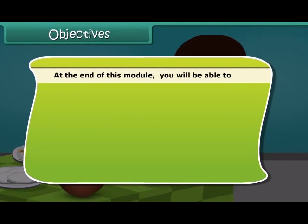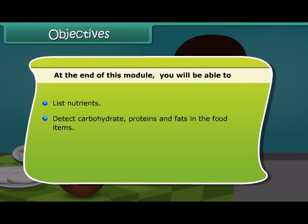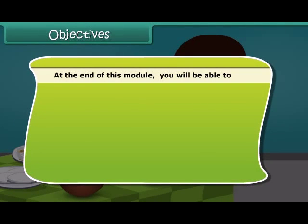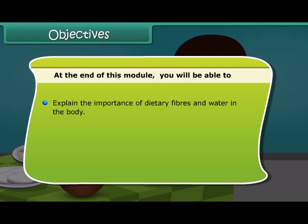Dear friends, at the end of this lesson, you will be able to list nutrients and detect carbohydrates, proteins and fats in the food items. You will also be able to describe different vitamins with their roles and discuss the importance of minerals in the body. In addition to this, you will also be able to explain the importance of dietary fibers and water in the body, explain the importance of balanced diet, and define deficiency diseases.